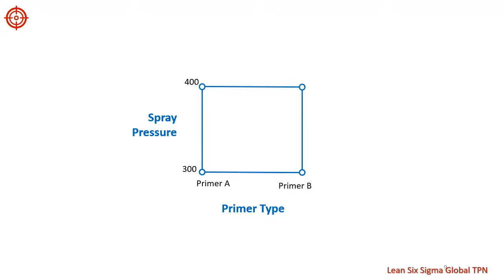So ABC uses a two-level design for this study. In this case, the two factors are primer type and spray pressure. Primer type is a categorical factor and spray pressure is numeric. The levels for primer type are primer A and primer B. The levels for spray pressure are 300 and 400 kPa.